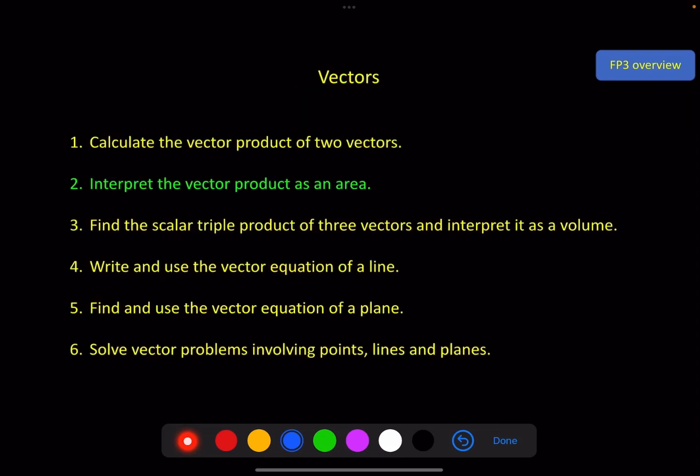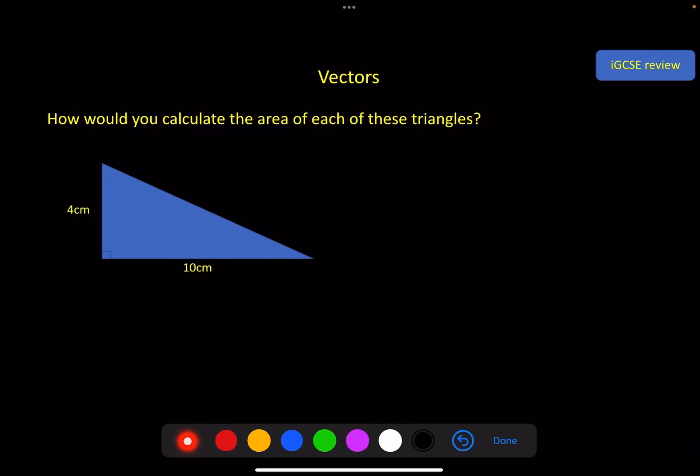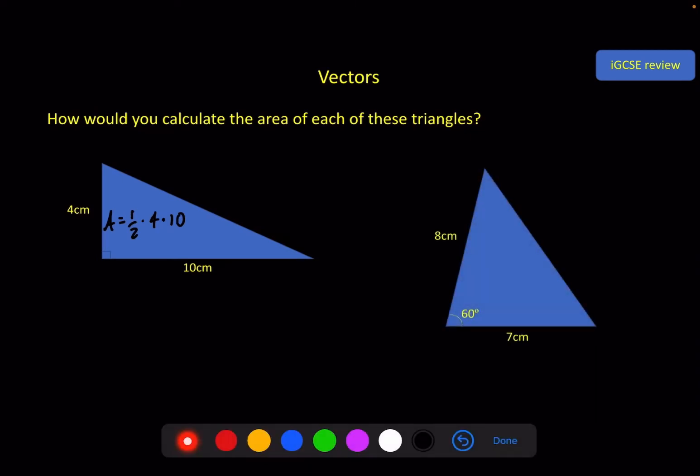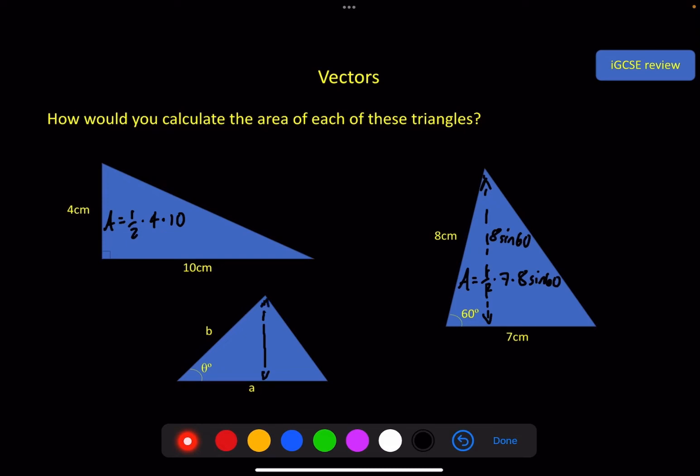In this video we're going to interpret the vector product as an area of a particular shape. To get us going, a few very simple triangles here. The area of this one is half times 4 times 10. If you don't have a perpendicular side, you need to make one, and that is 8 sine 60. So you get half times 7 times 8 sine 60. We end up with half a times b times sine theta, which should be a familiar formula to you.